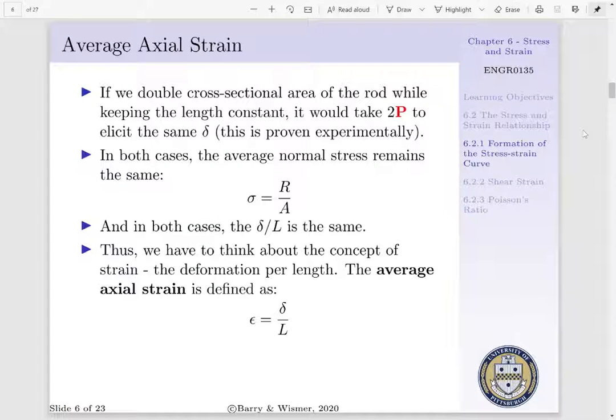For instance, if we double our cross-sectional area, we will have to apply 2P to elicit the same deformation. This makes sense theoretically, and we can prove this experimentally.